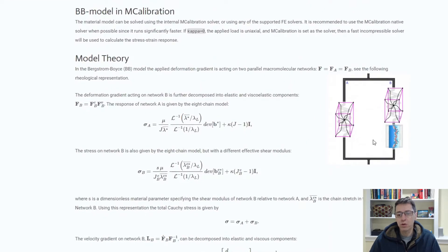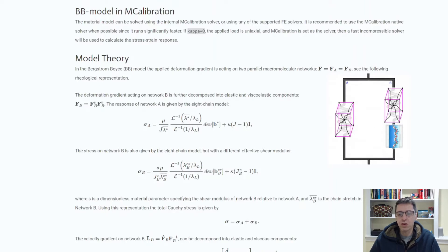Here's the two-network representation: there are two hyperelastic components that you need to specify through experimental data, and each of these has a shear modulus and a bulk modulus associated with them. The stiffness of the second hyperelastic element is simply a factor S times the properties of the first one. That reduces the number of parameters you need to find — there's just one parameter for the second hyperelastic network.